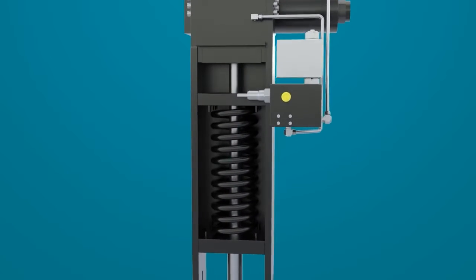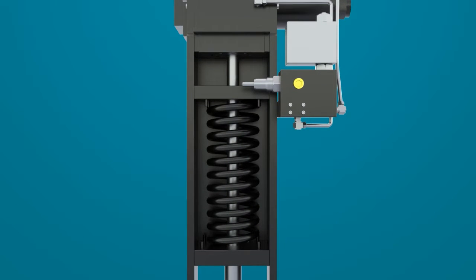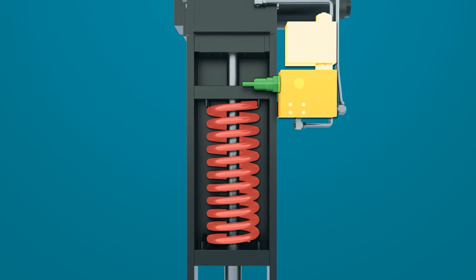REXA linear actuators with spring fail-safe positioning are equipped with a solenoid-operated valve, a fail-safe speed control valve, and a spring mounted in series with the actuator's hydraulic cylinder.